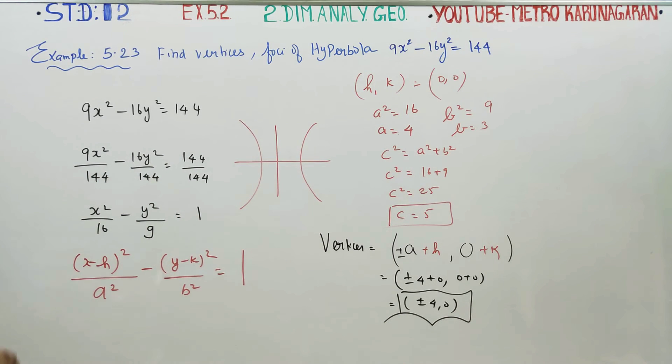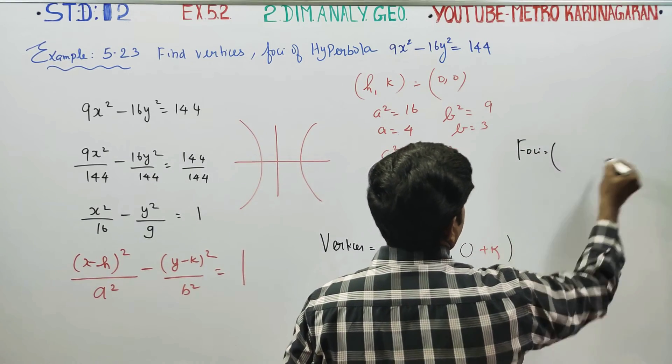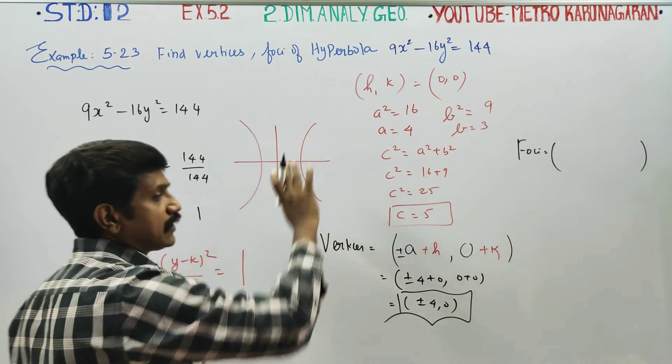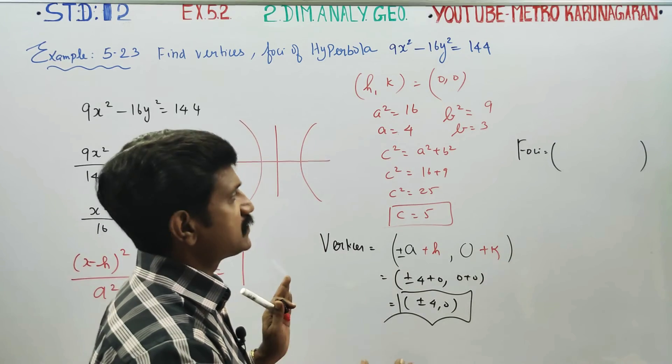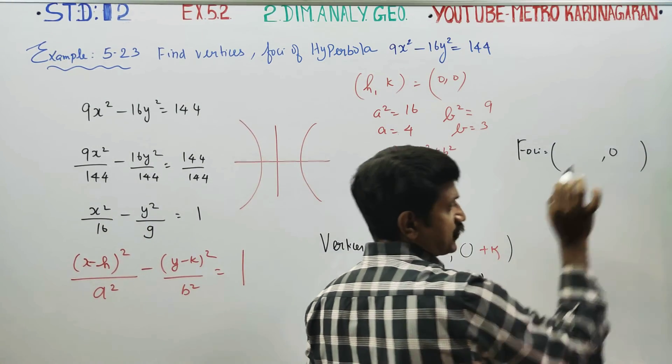Then coming to the foci. Again, if it is horizontal, whether hyperbola or ellipse, horizontal means y value is zero.